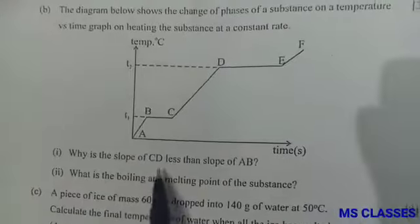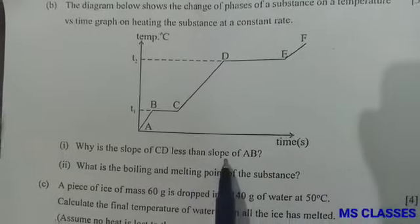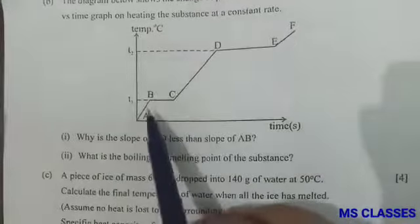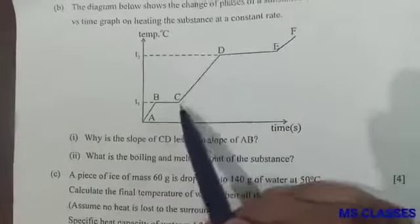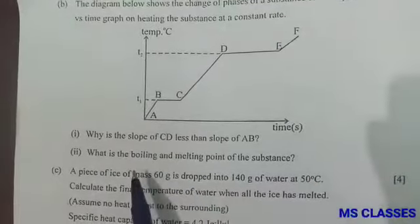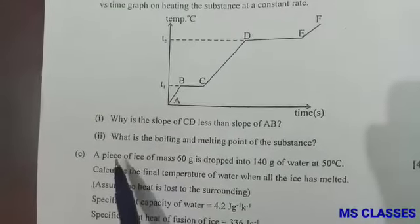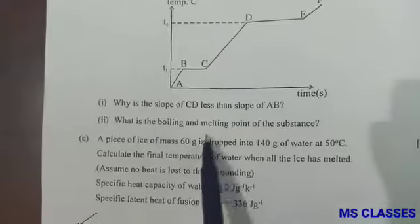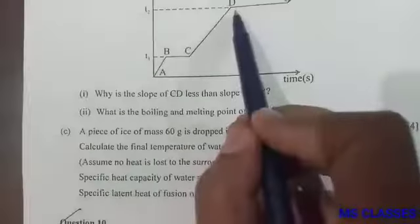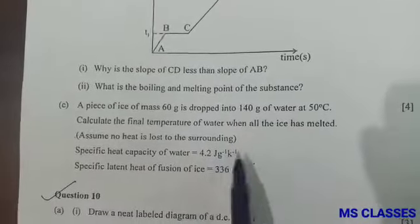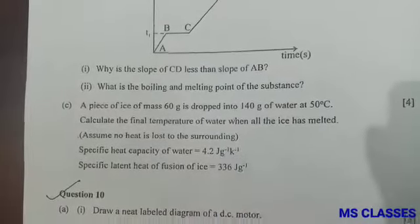Part (b): In this diagram, why is the slope of CD less than slope of AB? As you can see, the latent heat of fusion in AB is greater than that of the latent heat of vaporization. This is the reason why the slope of CD is less than slope of AB. Second, what is the boiling and melting point? Boiling point is T2 degrees Celsius, and melting is T1 degrees Celsius.